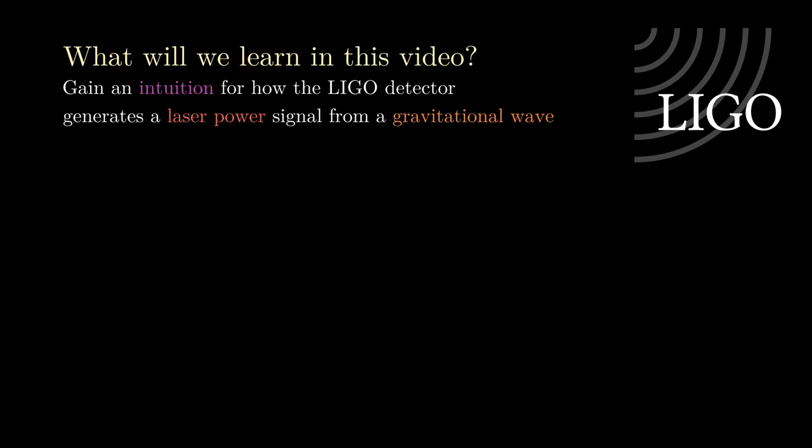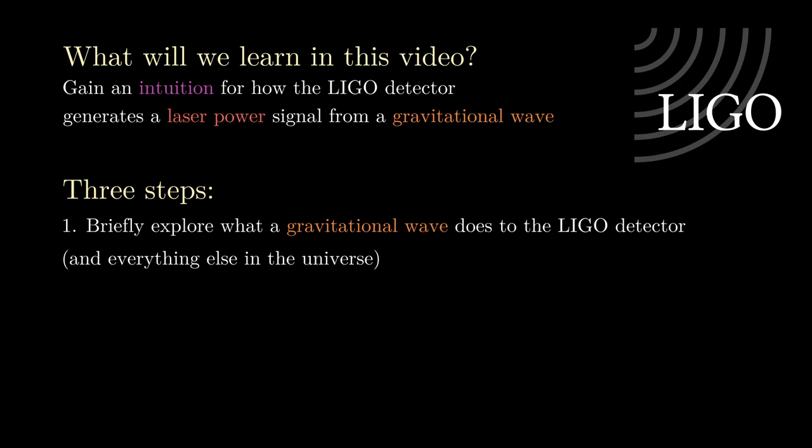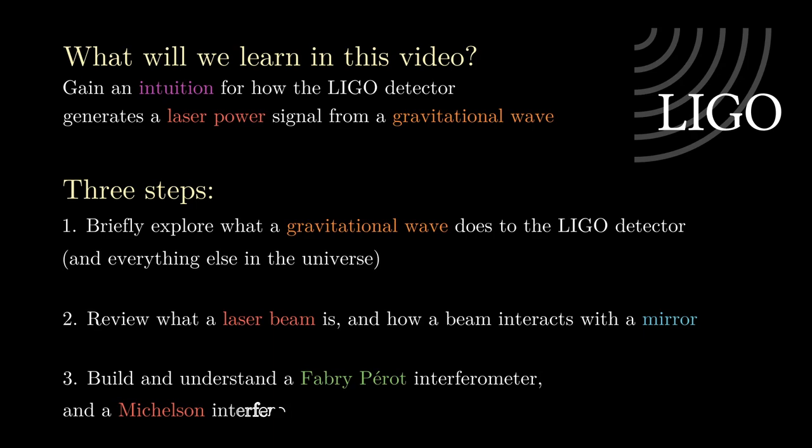Today, we will derive how Advanced LIGO's optical configuration amplifies this tiny astrophysical signal into something we can detect. We'll do this in three steps. First, we'll briefly explore what a gravitational wave does to the LIGO detector and everything else in the universe. Second, we'll delve into the fundamentals of optics and review what a laser beam is and how it interacts with a mirror. Third, we'll use what we learned to build a Fabry-Perot interferometer and a Michelson interferometer, the core technologies of LIGO.